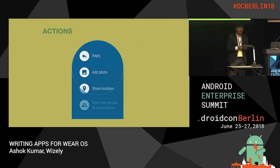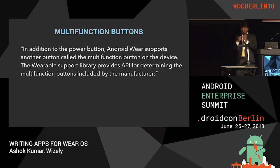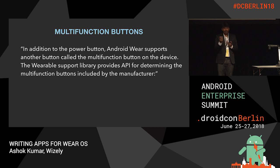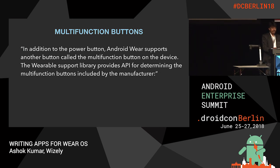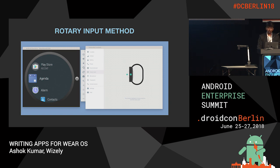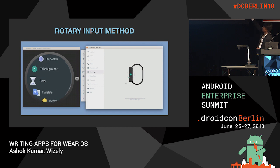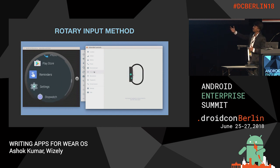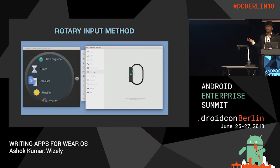Different manufacturers come with three to four physical buttons. For example, the Fossil watch with Wear 2.0 has three buttons — these are called multi-function buttons. In addition to the power button, Android Wear supports multi-function buttons on the device. The wearable support library provides APIs to determine the multi-function buttons included by the manufacturer. The rotary input method enables rotary input with click events to perform specific actions like starting an app.